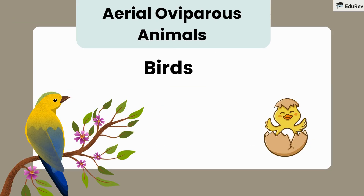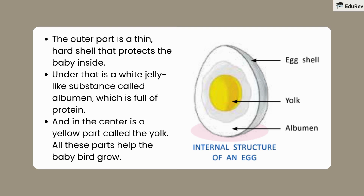First, let's talk about aerial oviparous animals. The main example here is birds — all birds reproduce by laying eggs. Now let's look inside a bird's egg. It has three main parts: the outer part is a thin, hard shell that protects the baby inside; under that is a white jelly-like substance called albumin, which is full of protein; and in the center is a yellow part called the yolk. All these parts help the baby bird grow.